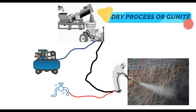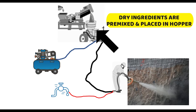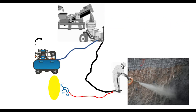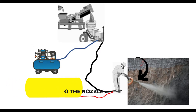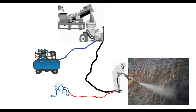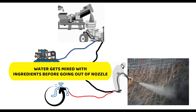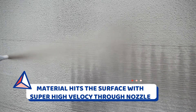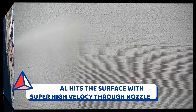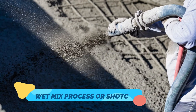Let us go through the dry process of guniting. Dry ingredients are premixed and placed in a hopper. Compressed air drives the material into the nozzle. Water gets mixed with the ingredients just before going out of the nozzle. The material hits the surface with super high velocity and adheres to the surface.